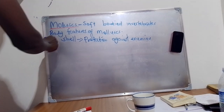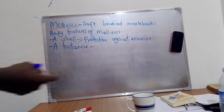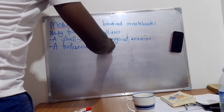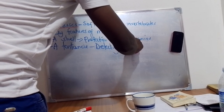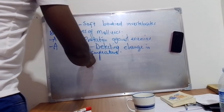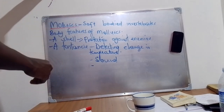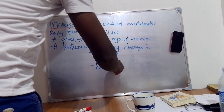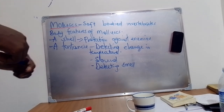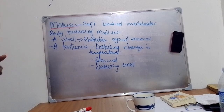Mollusks also have what you call a tentacle. A tentacle is an antenna-like structure on the head of mollusks. It has three functions: one, detecting change in temperature; two, detecting sound in the environment; and three, detecting smell in the environment.